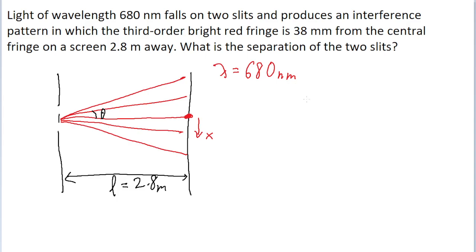So in the case of this problem, we're specifically being asked about a third order bright fringe, so we're dealing with constructive interference. Now recall that the formula for constructive interference is that d, the distance between the slits, multiplied by the sine of theta, is equal to m, the order of the fringe, multiplied by the wavelength.